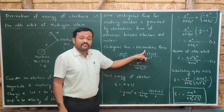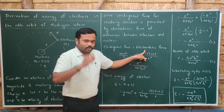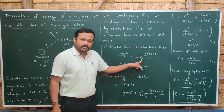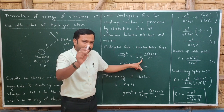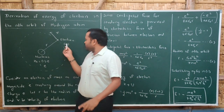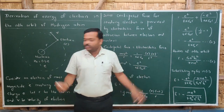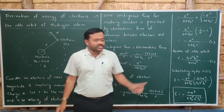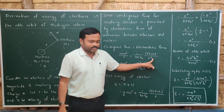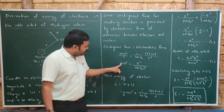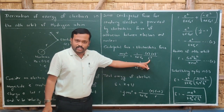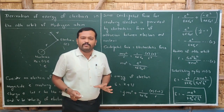The formula for centripetal force is mv²/r. The electrostatic force is given by Coulomb's law: 1/(4πε₀) times the product of the charges. The charge of the electron is e and the charge of the nucleus is also e, giving e·e = e² divided by r².